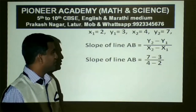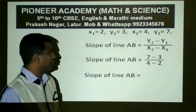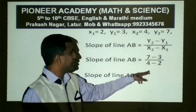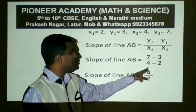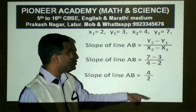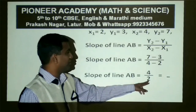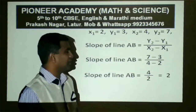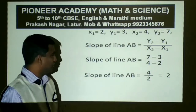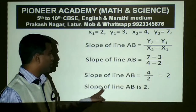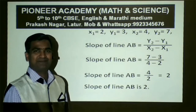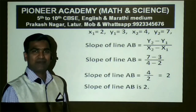Simple calculation: 7 minus 3 is 4, divided by 4 minus 2 is 2. So 4 divided by 2 equals 2. The answer is 2. Last statement: slope of line AB is 2. Thank you.